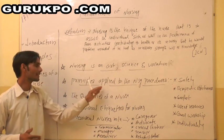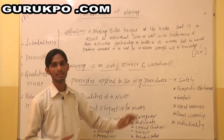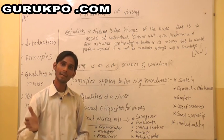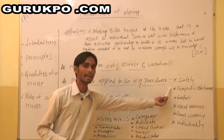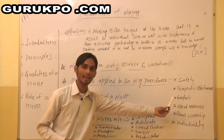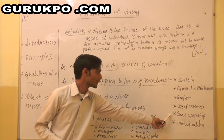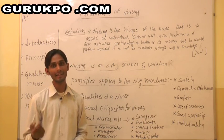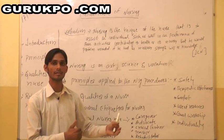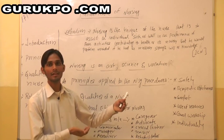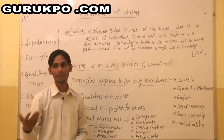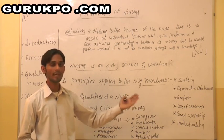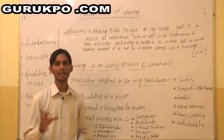Next, we will move on to the principles applied to nursing procedures — what are all the principles which are applied while we are working with the client. The following principles can be applied: safety, therapeutic effectiveness, comfort, use of resources, good workmanship, and individuality. First is safety — we have to protect the client as well as ourselves from infections. Infections spread nowadays in hospitals, and visitors coming to the hospital might get affected, so we should follow safety measures.